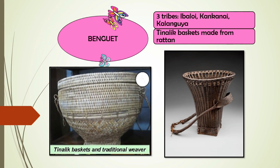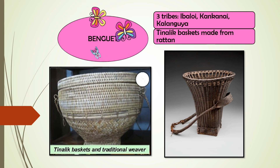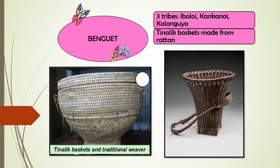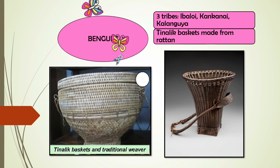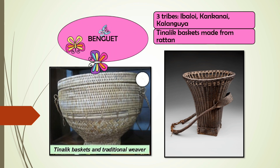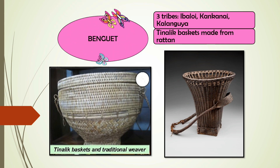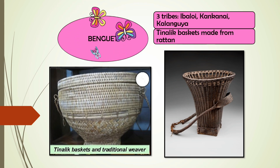Binguet is the homeland of three tribes: the Ibaloi in the south-east, the Kankanae in the north-west, and the Kalanguya in the east. Tinalik is the known basket of the Ibaloi.